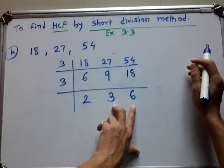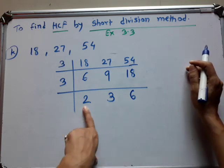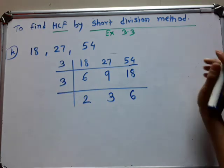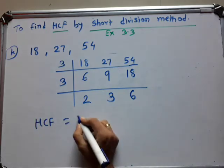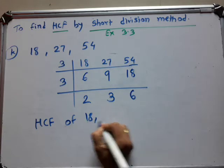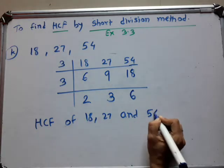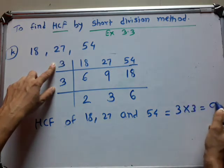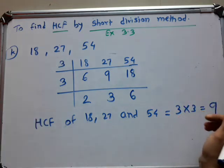Because these two numbers will be divided by 3 — 3 times 1 are 3 and 3 times 2 are 6 — but this 2 is not divided by 3. So we stop here. And what is the SCF of these numbers? The SCF of 18, 27, and 54 is 3 multiplied by 3. And 3 times 3 are 9. So 9 is your answer.